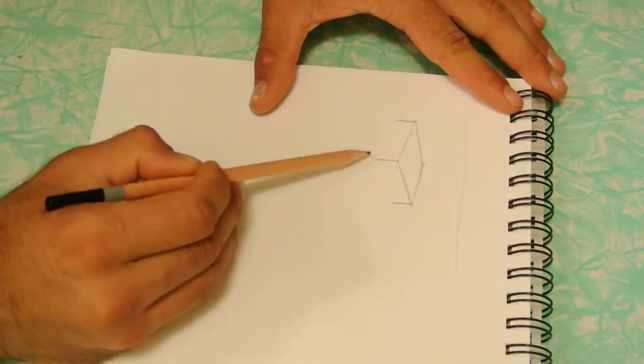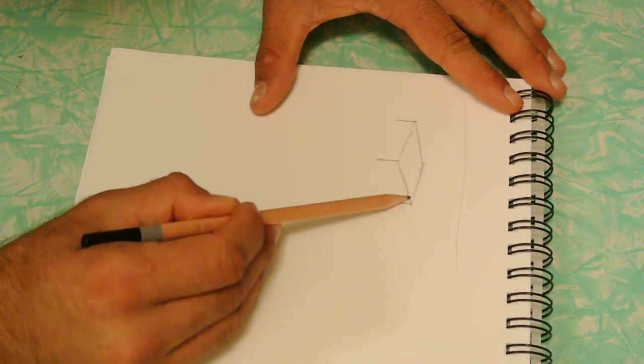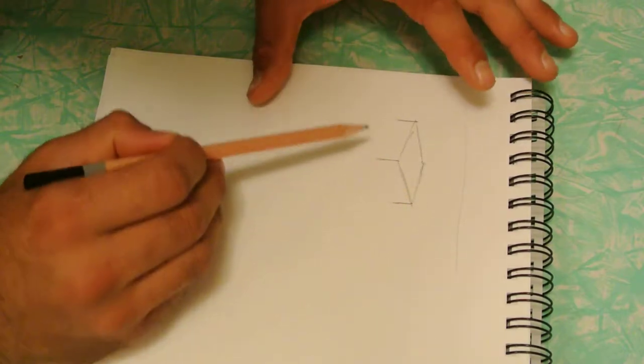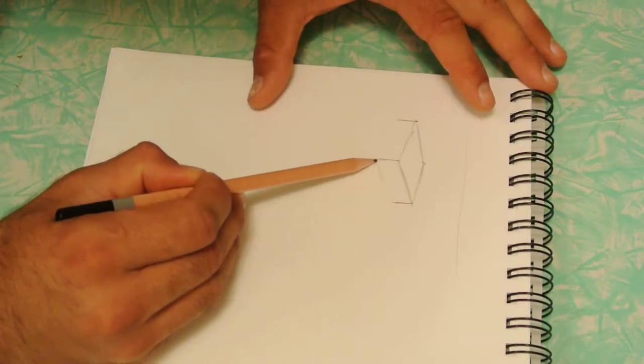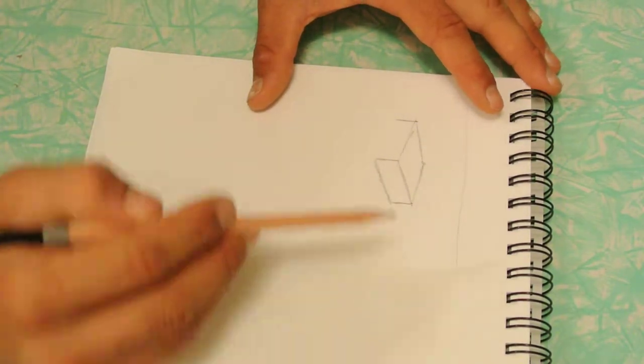Now you're going to connect these two lines. Make sure this line is even with this line or your box is going to look a little crooked. So there you go.